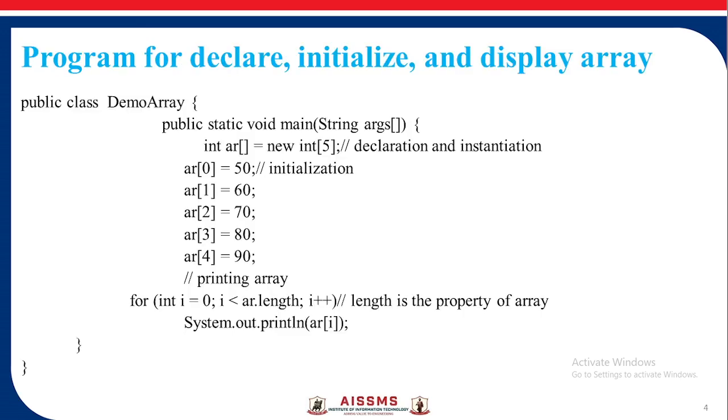Now consider this example program showing declaration, initialization and displaying the array. Here we have taken a class demo array and then we have declared and instantiated the array like int AR square bracket equal to new int 5, which gives the size for the array as 5. So we can insert five elements into the array starting from index 0. So initialization involves AR 0 is equal to 50, AR 1 is equal to 60, AR 2 is equal to 70, AR 3 is 80, AR 4 is 90.